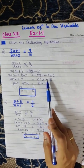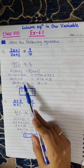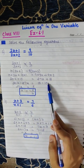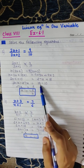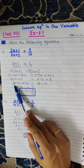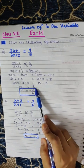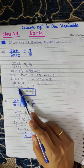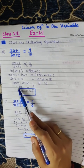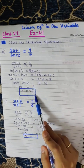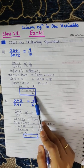Move 27x from the right hand side to the left hand side; plus 27x becomes minus 27x. Move plus 10 from the left hand side to the right hand side; plus 10 becomes minus 10. So, 20x minus 27x equals 18 minus 10, which gives minus 7x equals 8. Therefore, x is equal to minus 8 by 7.